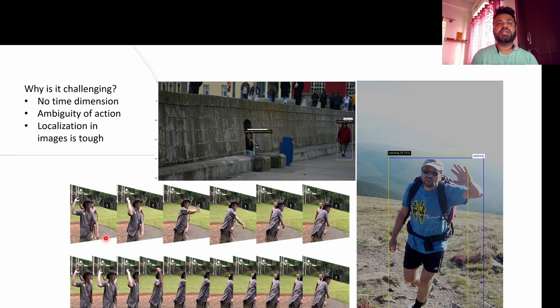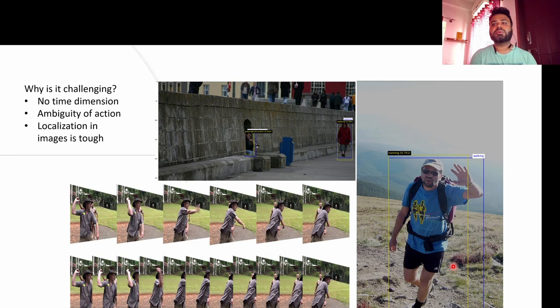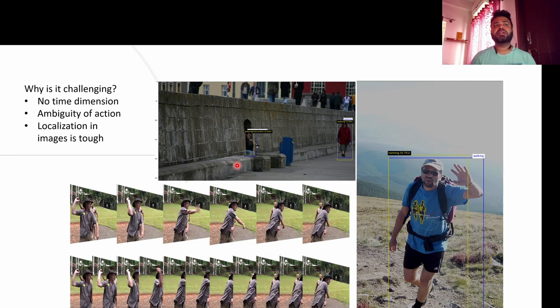Even for the human eye, recognizing a particular action from a still image is pretty difficult because in some cases different actions are ambiguous in nature. For instance, deducing if a person is actually walking or running is pretty difficult. The ground truth label was marked as walking while our model wrongly predicted it as running. These are inherent issues in action recognition when done on still images.